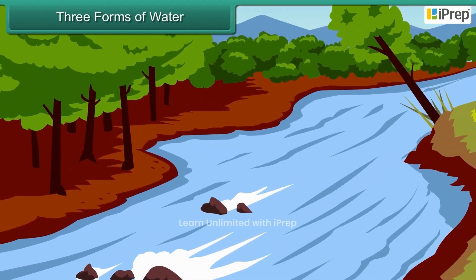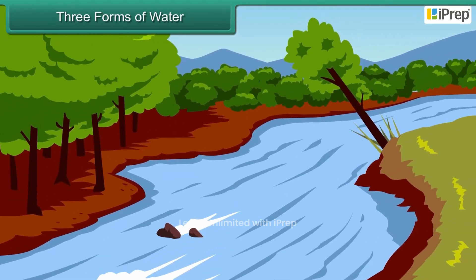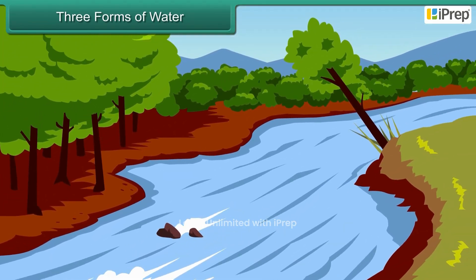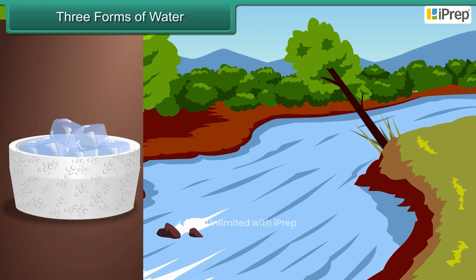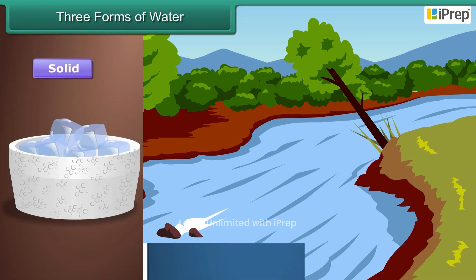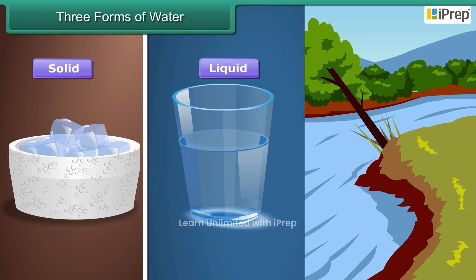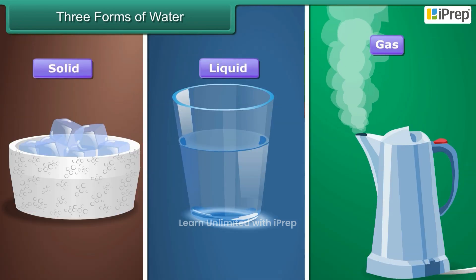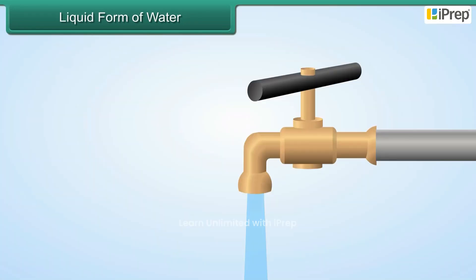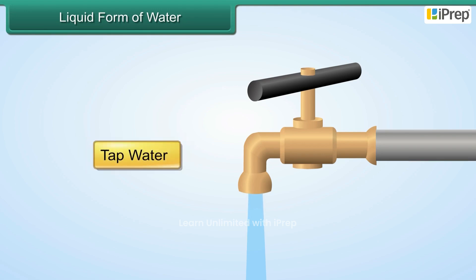There are three forms of water. They are solid, liquid, and gas. The water we get from taps is in liquid form.